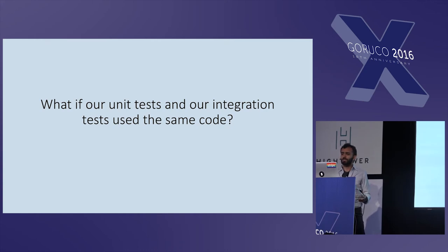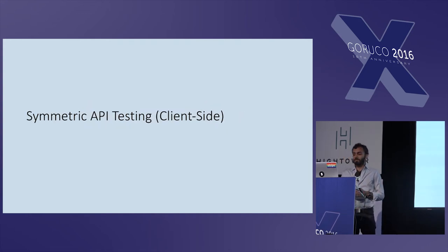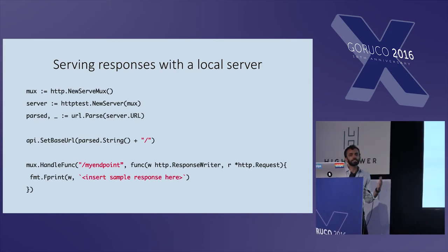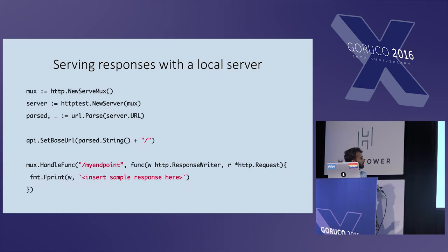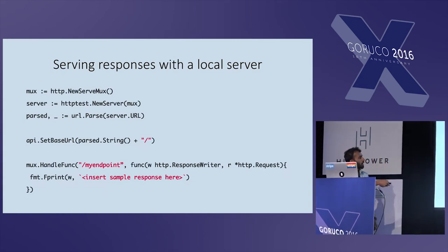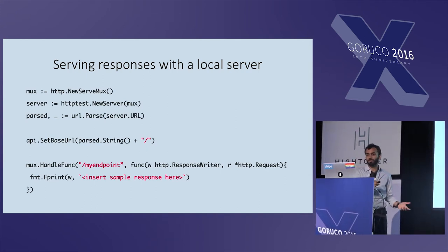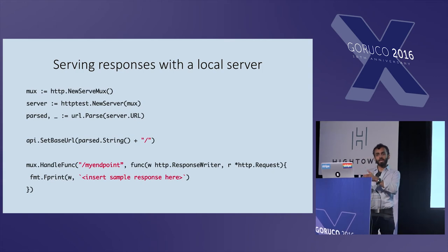Wouldn't it be nice to get the reliability of unit tests but also have the completeness of integration tests — and do all of this without writing any additional code whatsoever? We can. We start by creating a local server — these first lines just set up a local server in our testing code. Then we tell the client that instead of querying the actual API, it should query our local server. We can construct an endpoint and hard-code the example response we want it to return for our unit tests, and we can enable or disable this local server with just a flag.